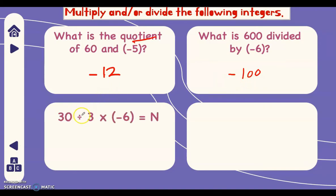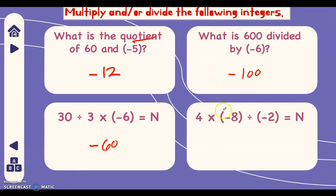Next, 30 divided by 3 times negative 6 equals n. We follow BODMAS/order of operations — division comes before multiplication, so 30 divided by 3 is 10, and 10 times 6 is 60. There is only one negative integer, therefore the sign of the answer is negative. Last, we have 4 times negative 8 divided by negative 2. Multiplication comes before division, so 4 times 8 is 32, divided by 2 is 16. We have 2 negative integers, which is even, therefore the sign of the answer is positive.